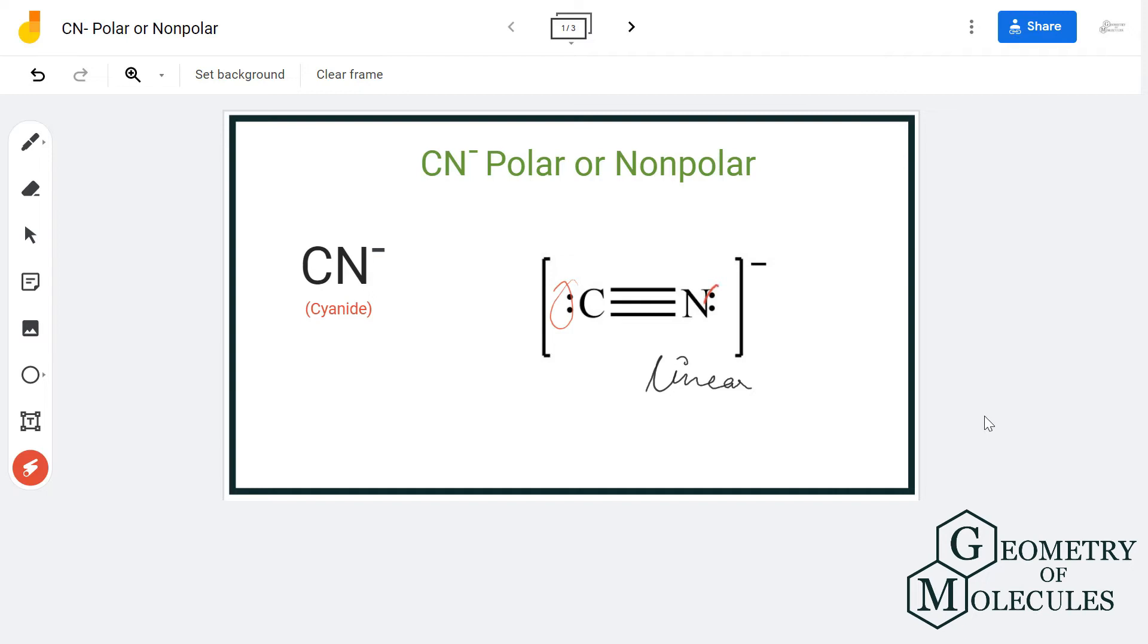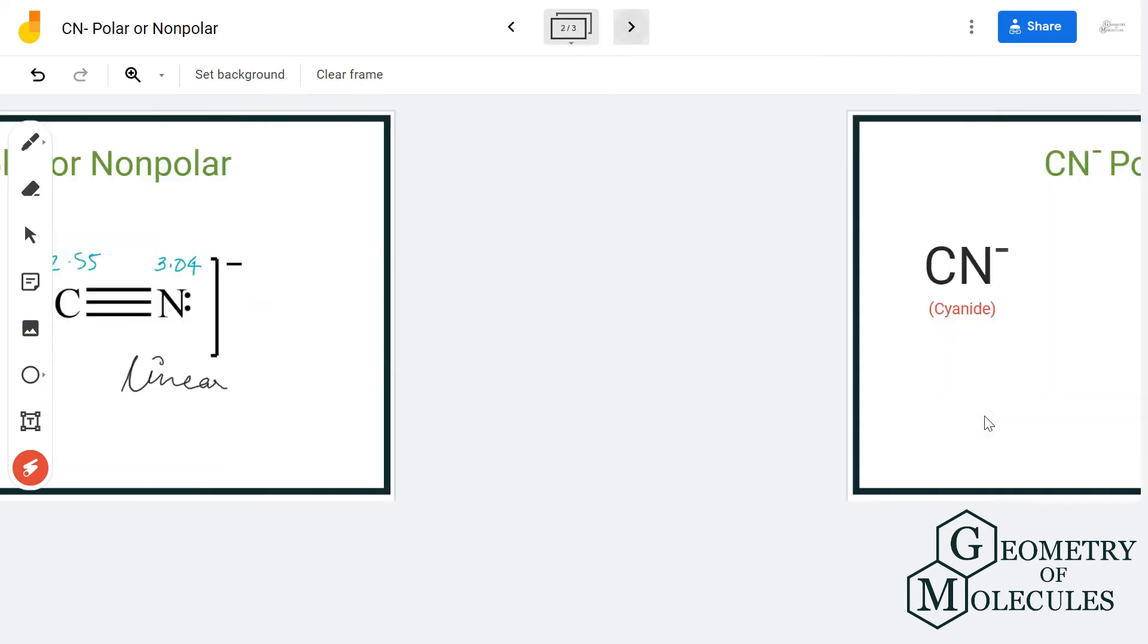When it comes to electronegativities, carbon has an electronegativity value of 2.55 and nitrogen is 3.04. When you calculate the difference, it is higher than 0.4. If the difference is higher than 0.4, the bond is polar. So here, the triple bonds formed between carbon and nitrogen are polar. Hence, there is polarity in the cyanide ion.